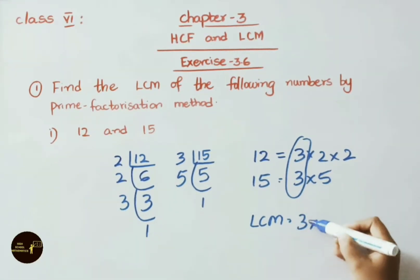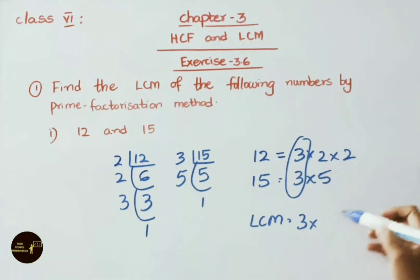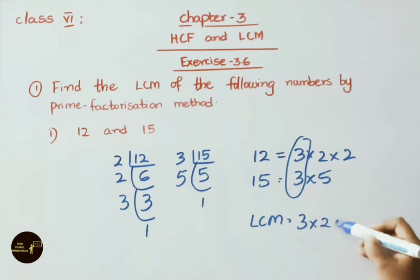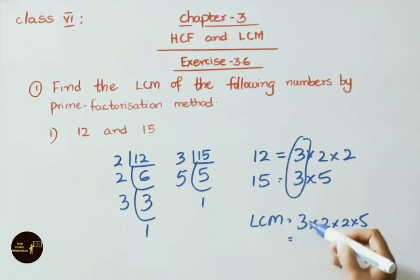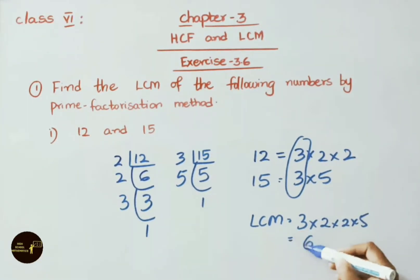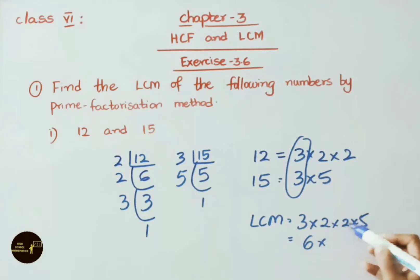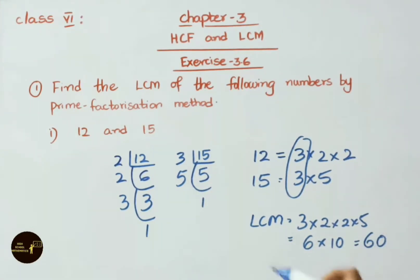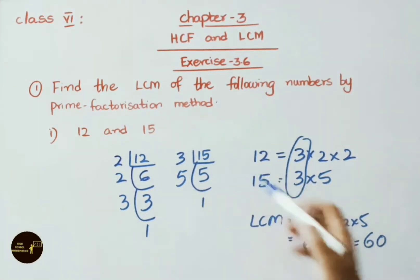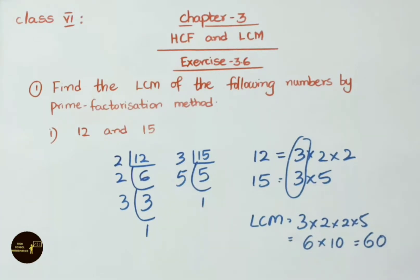So LCM equals 3 × 2 × 2 × 5. That is: 3 × 2 = 6, 2 × 5 = 10, 6 × 10 = 60. Therefore LCM for 12 and 15 is 60.